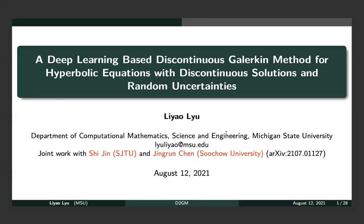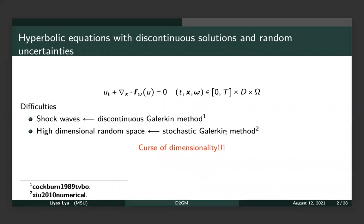My topic today is solving a deep learning based discontinuous Galerkin method for hyperbolic equations with discontinuous solutions and random uncertainties. This is joint work with Professor Shin and Professor Jing Renchen. We consider hyperbolic equations of the form u_t plus the gradient of f(omega, u) equals zero. This problem has several difficulties: it can generate shock waves, such as Burgers' equation without a viscosity term, and there will be randomness in the parameters or initial condition.